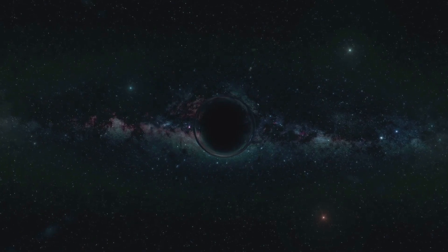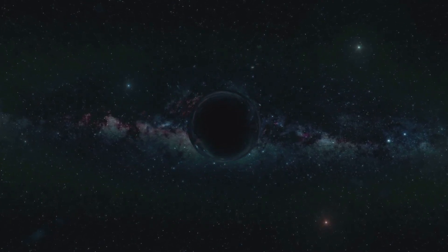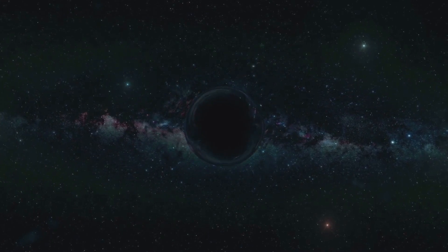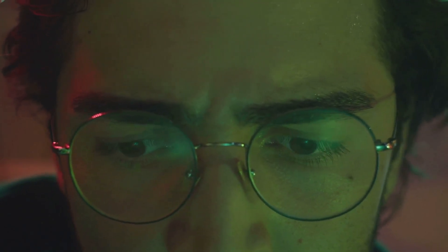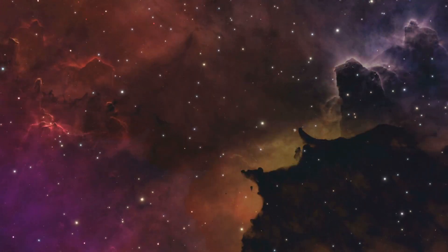One of the most fascinating predictions of general relativity is black holes, regions of space-time where gravity is so intense that not even light can escape. Another is gravitational waves, ripples in space-time caused by massive objects accelerating, like merging black holes or neutron stars. These waves were first detected in 2015, confirming yet another of Einstein's predictions. But what does this mean for our understanding of the universe and our place within it?